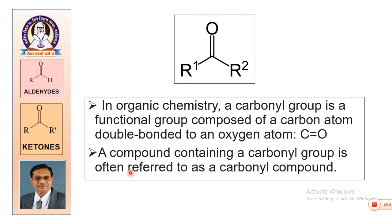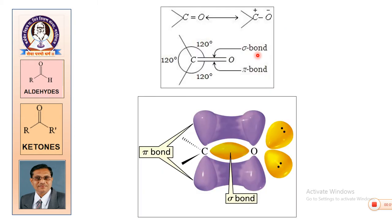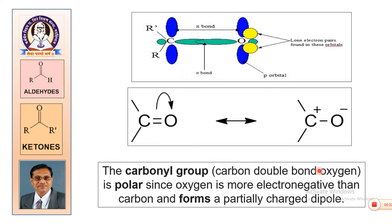Before dealing with any reaction of aldehydes and ketones, one must keep in mind that carbonyl compounds are those which have a C=O linkage. This group is called the carbonyl group. The geometry is trigonal planar, there is a pi bond and a sigma bond, the bond angle is 120°, and the molecule is planar. Due to the difference in electronegativities between carbon and oxygen, the bond gets polarized — carbon acquires a partial positive charge and oxygen acquires a partial negative charge.